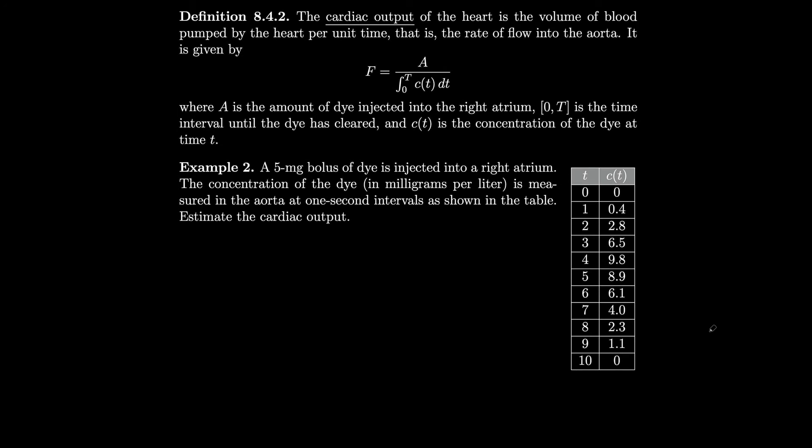The cardiac output of the heart is the volume of blood pumped by the heart per unit time, that is the rate of flow into the aorta. It is given by F equals the amount of dye divided by the integral of c(t)dt from 0 to T, where from 0 to T is the time interval until the dye is cleared, and c(t) is the concentration of the dye at time t.